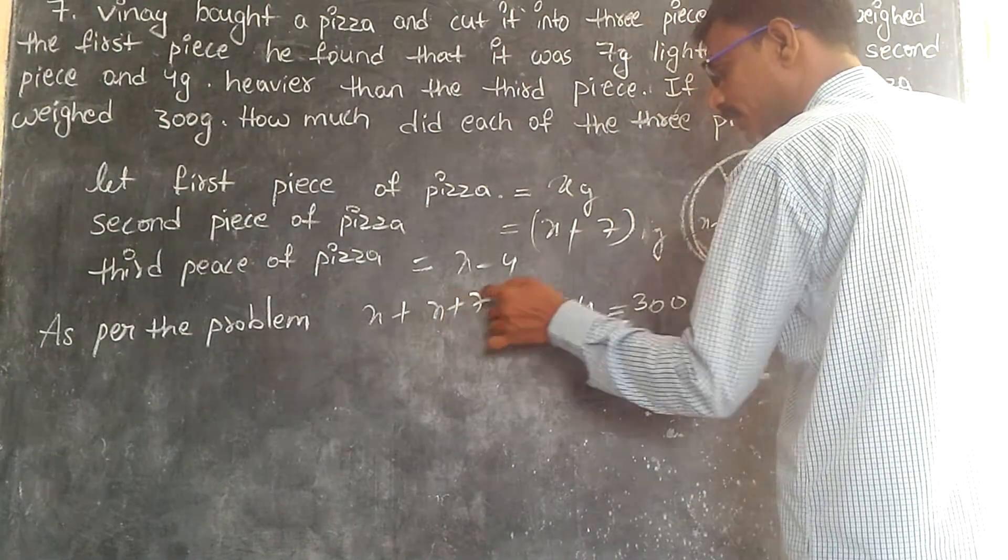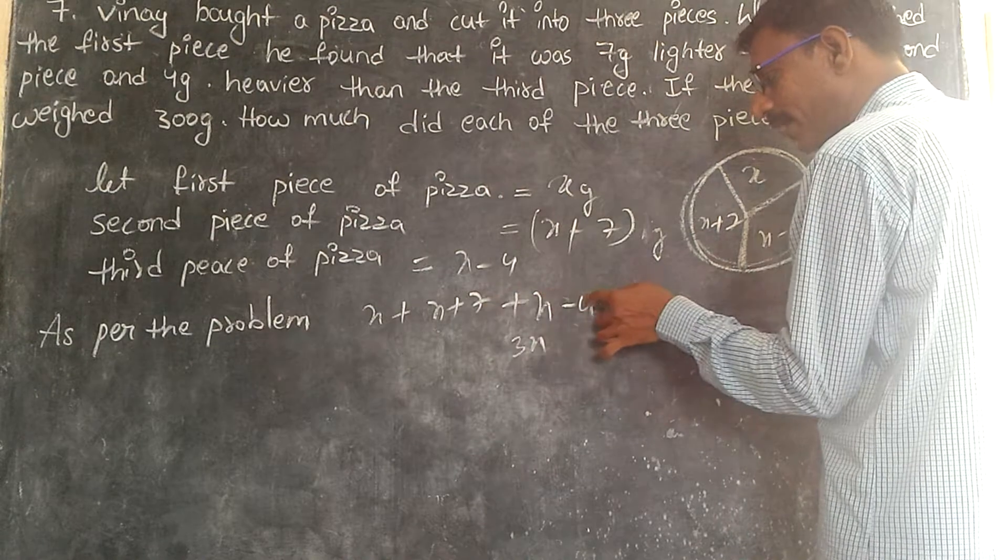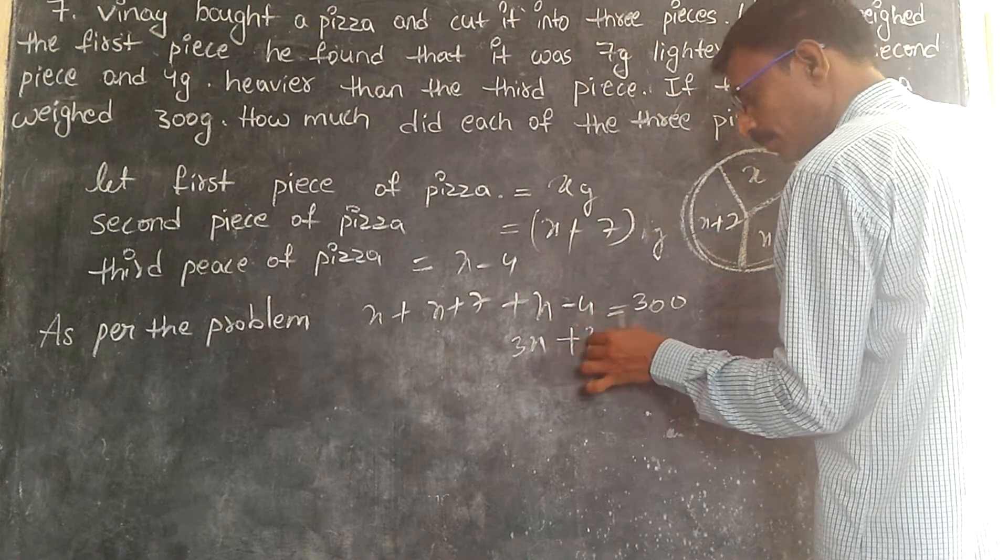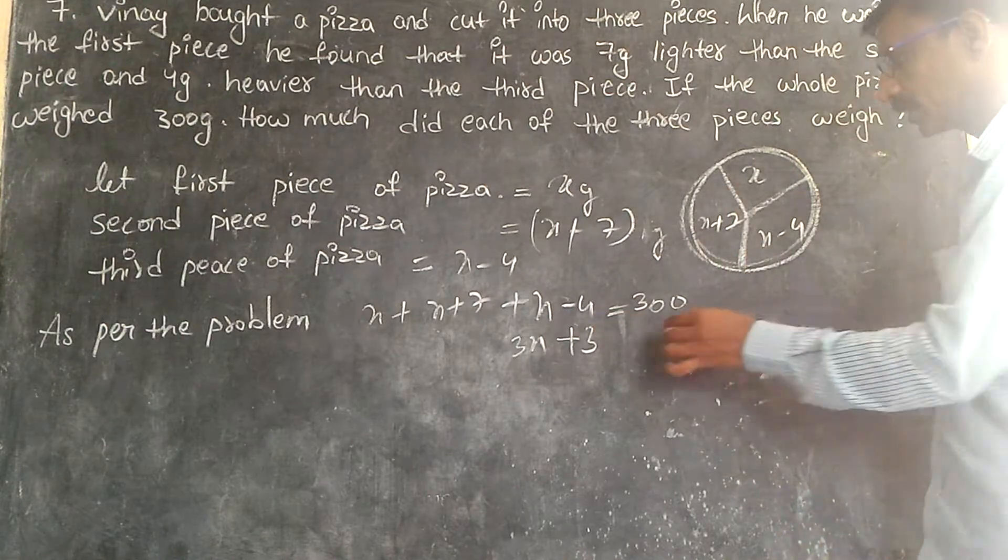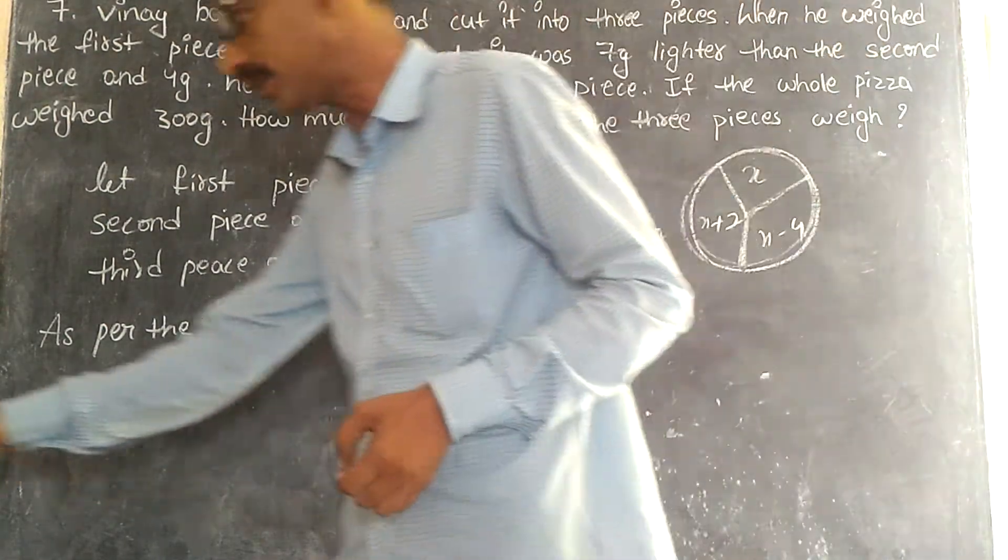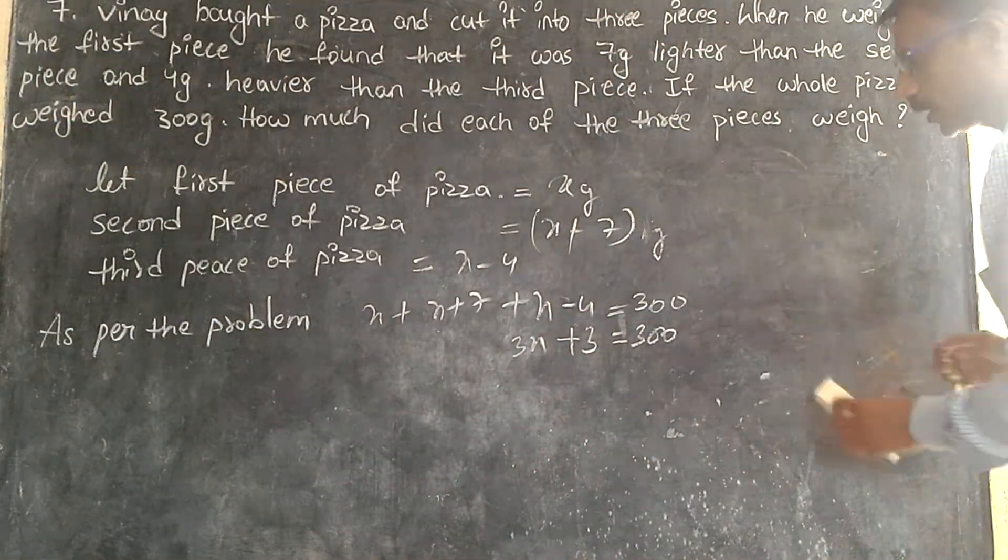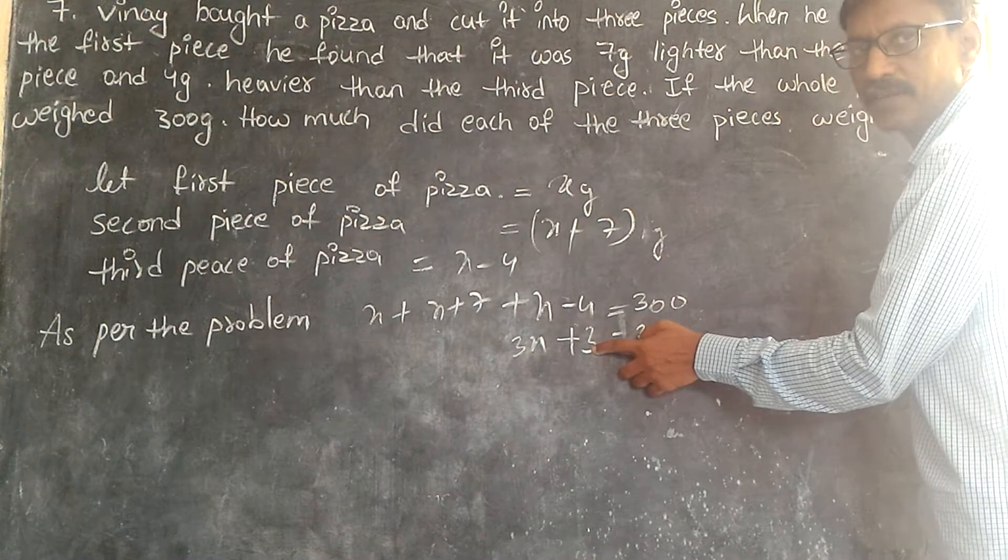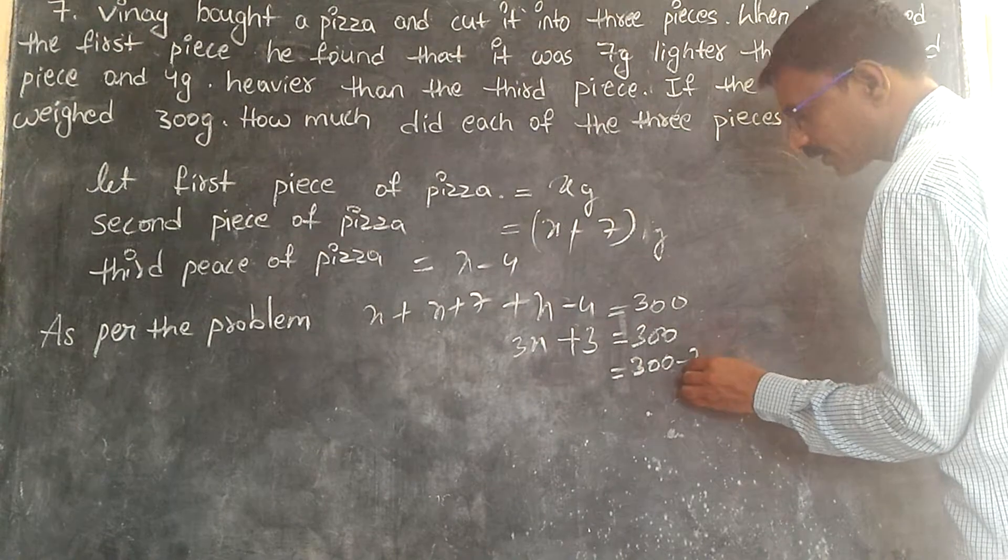So, X plus X plus X, how much? 3X. 7 minus 4 plus 3. That is equal to 300. It's clear? Now listen everybody. This is plus 3. By transposing this, minus. 300 minus 3.